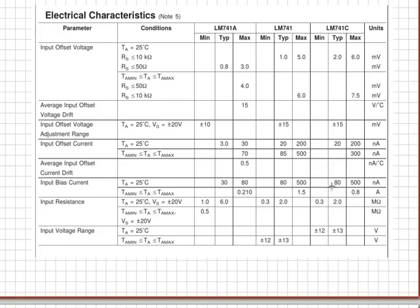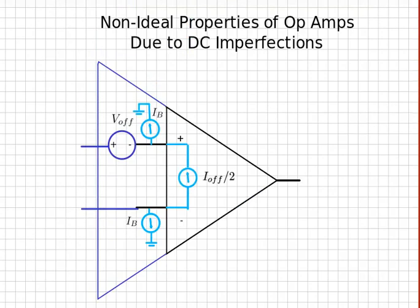These parameters allow us to calculate the output offset voltage. So what I mean is we would take our op-amp like this and put this model into our circuit, and then we would calculate the output voltage due to these parameters right here that are describing the DC imperfections.